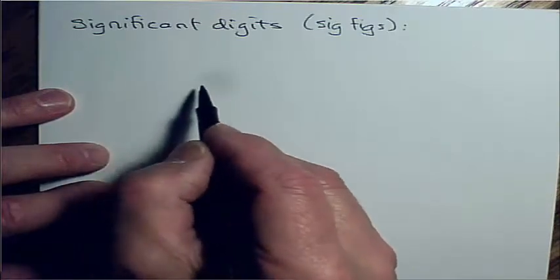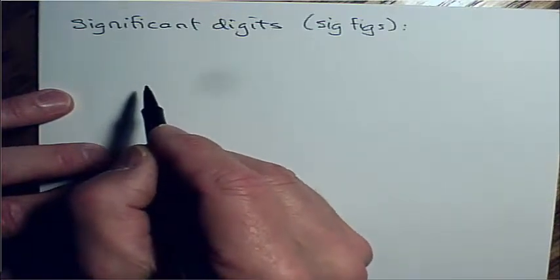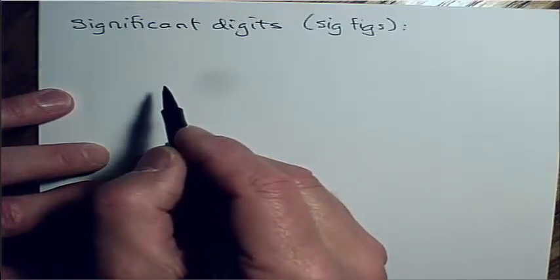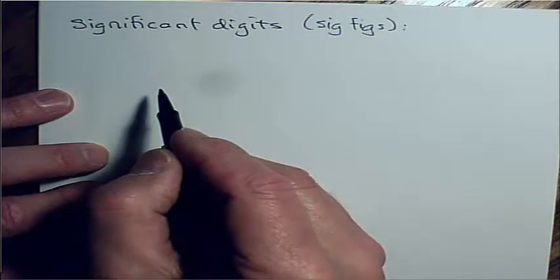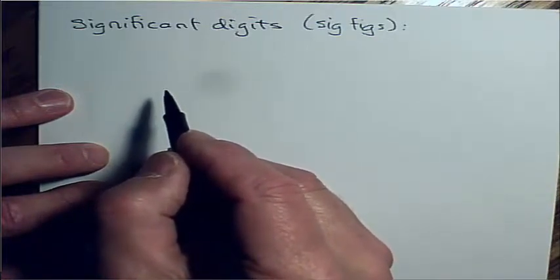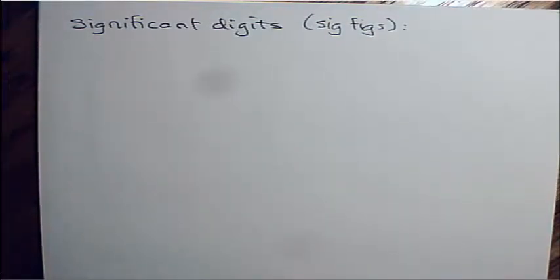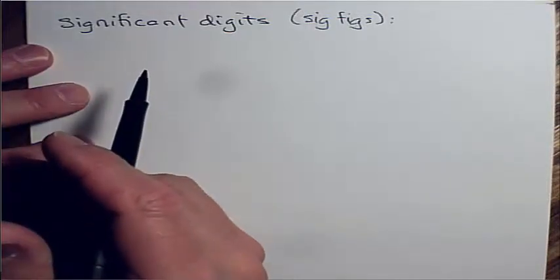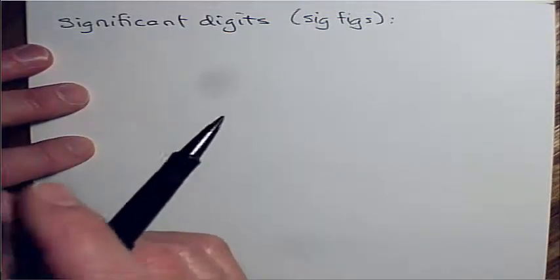Whatever markings you have on that graduated cylinder, you're going to estimate where the bottom of that meniscus is between those markings. And if it's dead on those markings, you're going to add a zero to that. That last digit is always going to be estimated or uncertain. It doesn't matter whether you're using an analog device like a graduated cylinder or a meter stick. Even a digital device like the balance we used, that last digit is always uncertain.